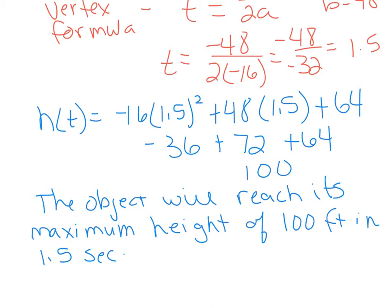It's perfectly fine to write two different sentences if you want. The object will be at its maximum height in 1.5 seconds. Period. The maximum height of the object is 100 feet. It's perfectly fine to write two sentences. I kind of like to write one. So that's fine too. As long as you answer both questions, you'll be covered there.